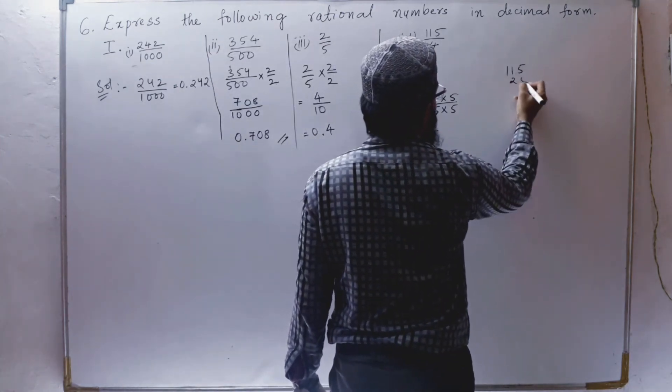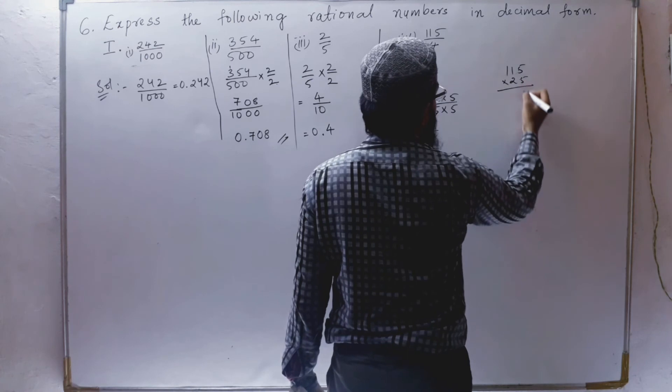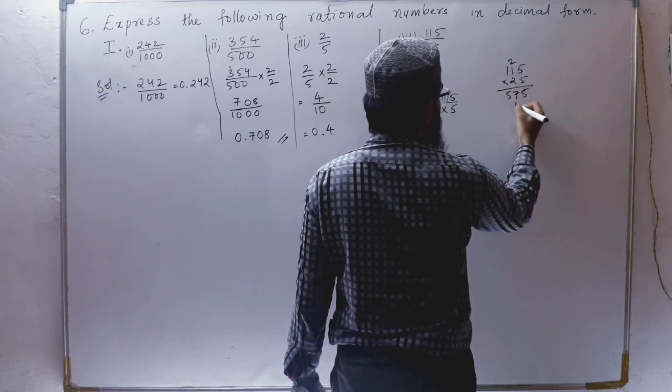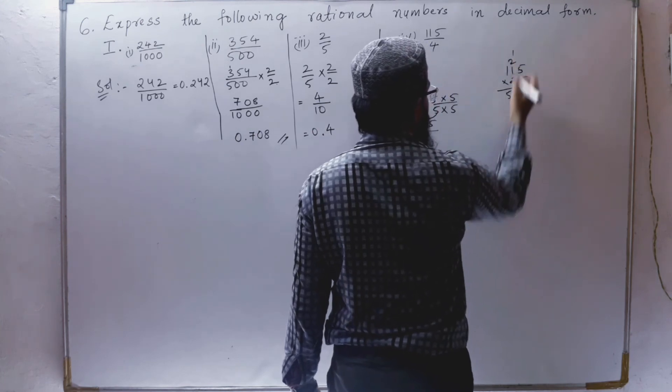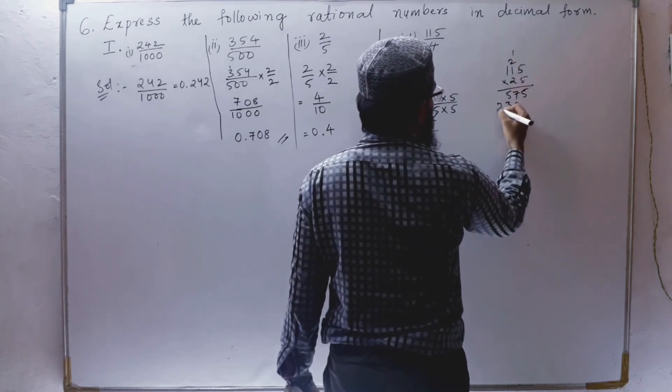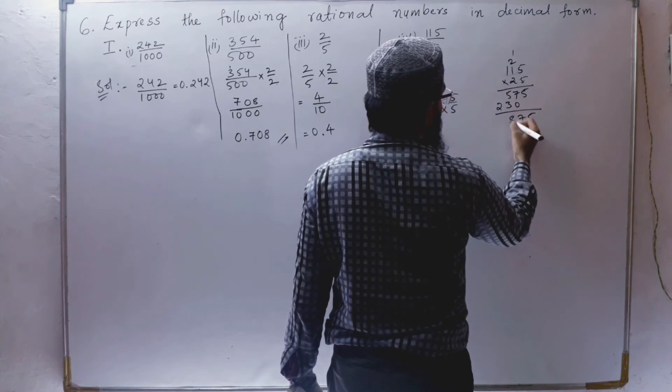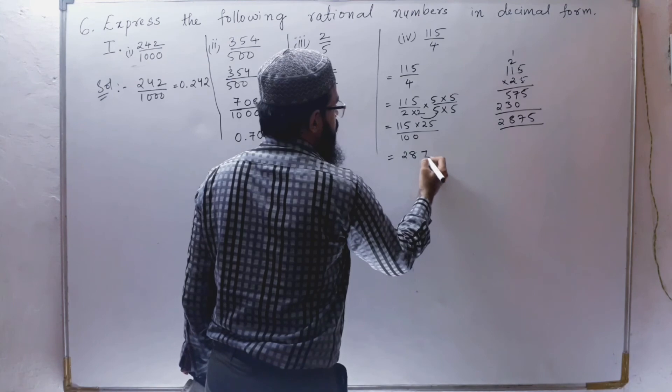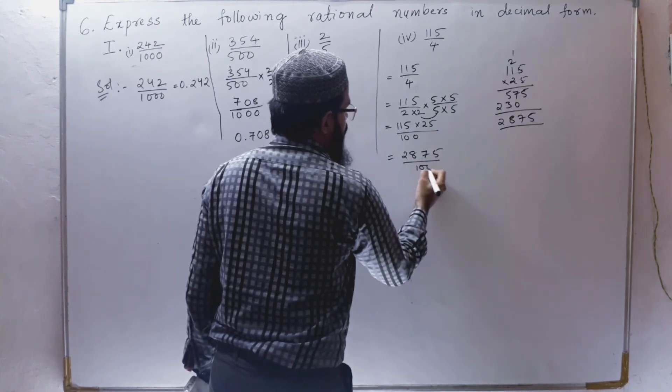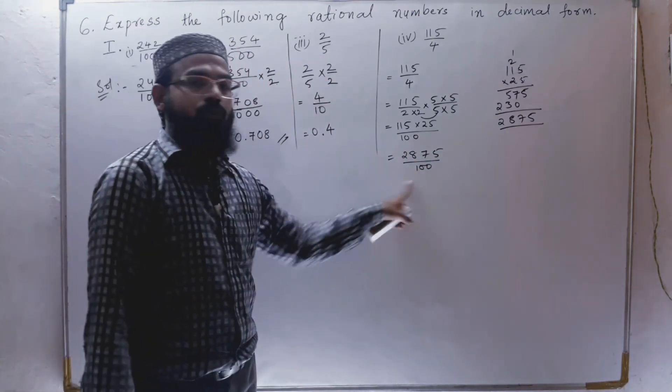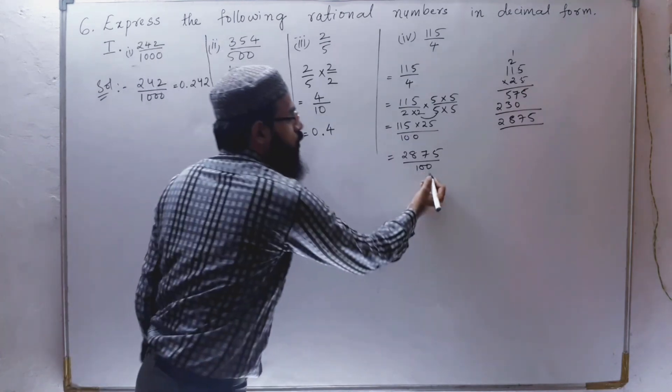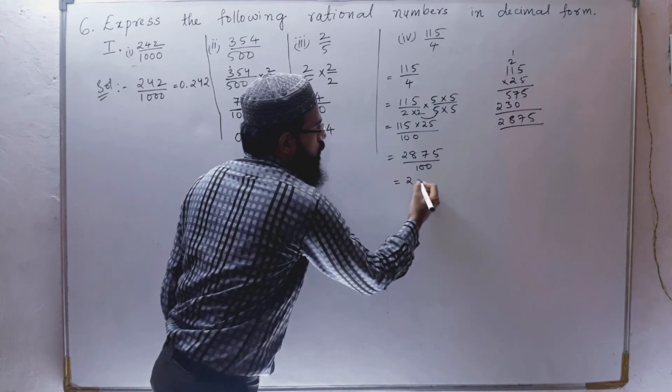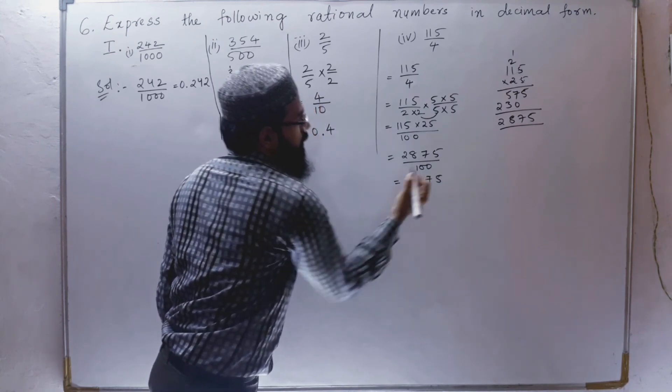So 25 into 115. 115 into 25. It gives us 5 times 5 is 25, 5 times 1 is 5 plus 2 is 7, 5 times 1 is 5, 2 times 5 is 10, 2 times 1 is 2 plus 1 is 3, 2 times 1 is 2. 5, 7, 5 plus 3 is 8, 2. 2875. So 2875 by 100. As you can see, there are two zeros. So we can put after 2 numbers, we can put decimal: 28.75 from backside.